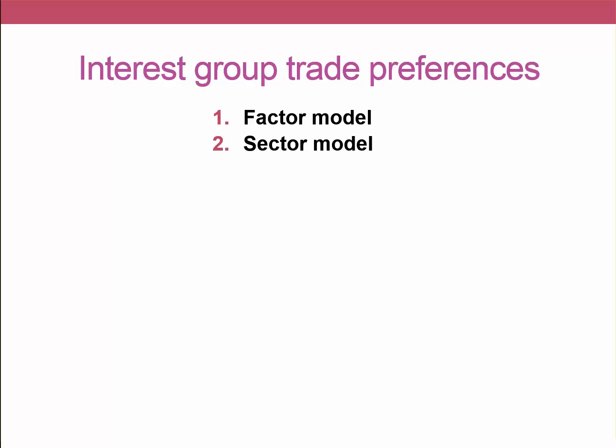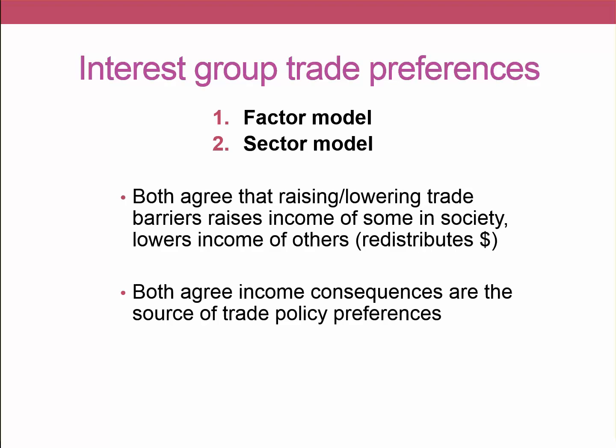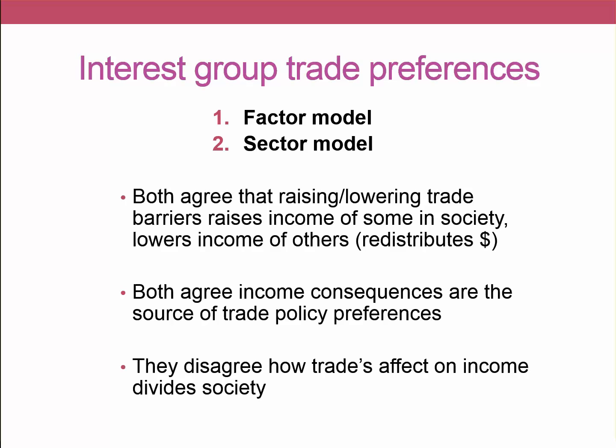The factor model and the sector model — we'll discuss the first of these in this video — are similar in many respects. They both agree that raising and lowering trade barriers raises the income of some in society and lowers the income of others, redistributing money within society. They also agree that these income consequences of trade are the source of trade policy preferences: if you're a winner from free trade you'll prefer it, and if you're a loser you'll oppose it. They disagree, however, on who the winners and losers are from free trade.